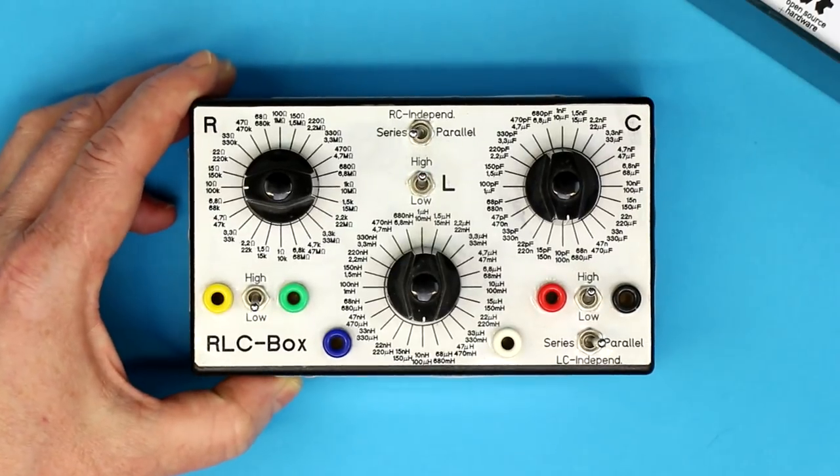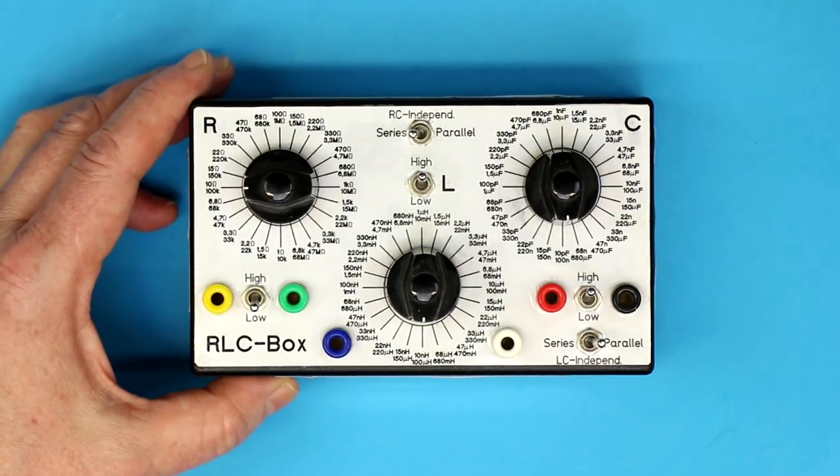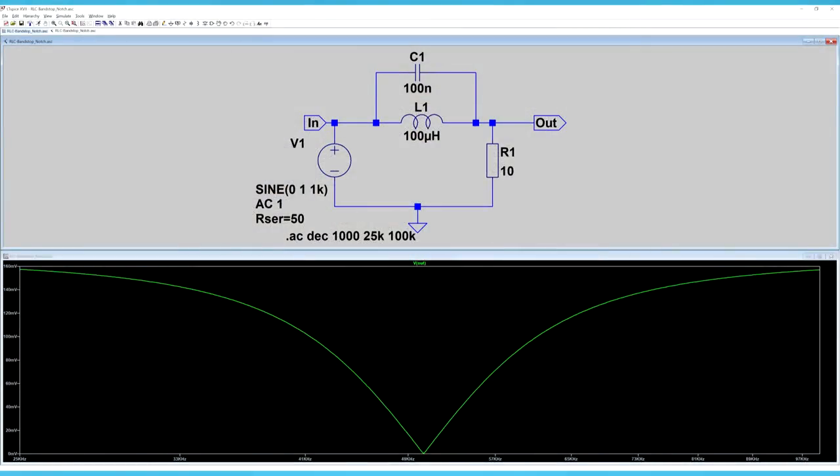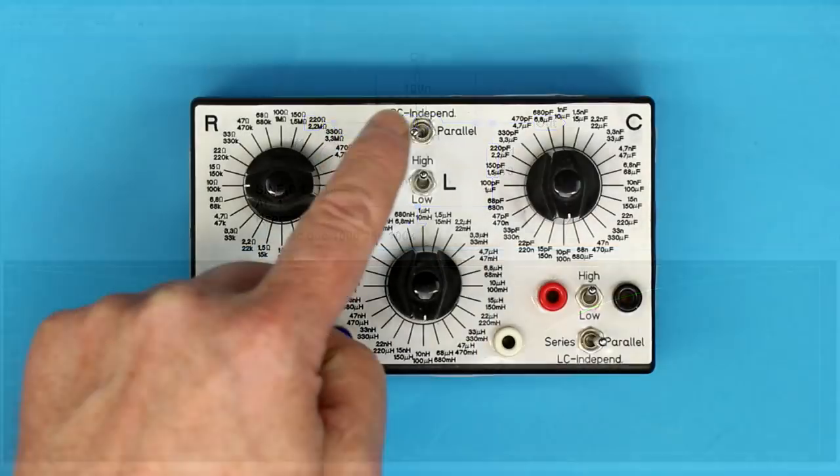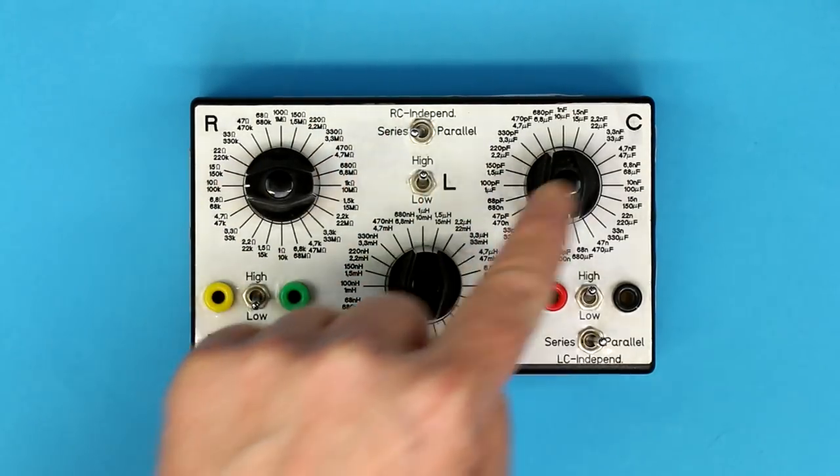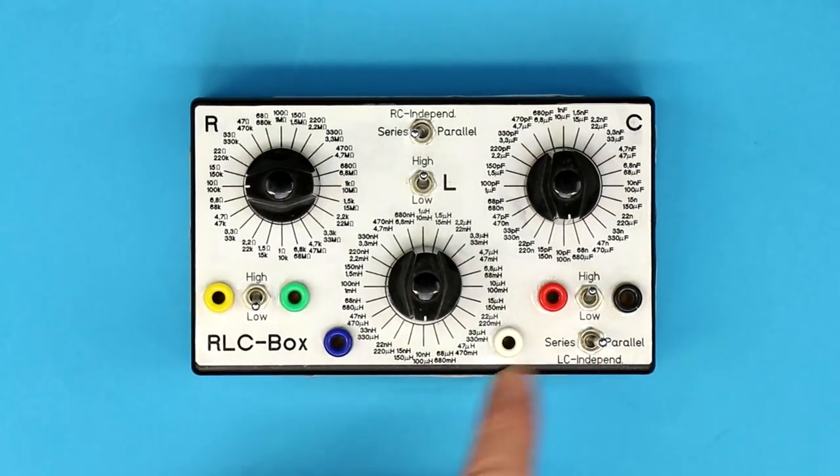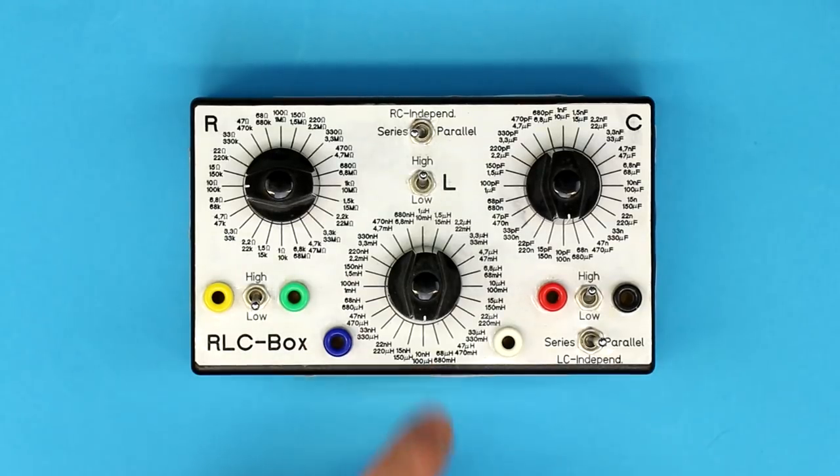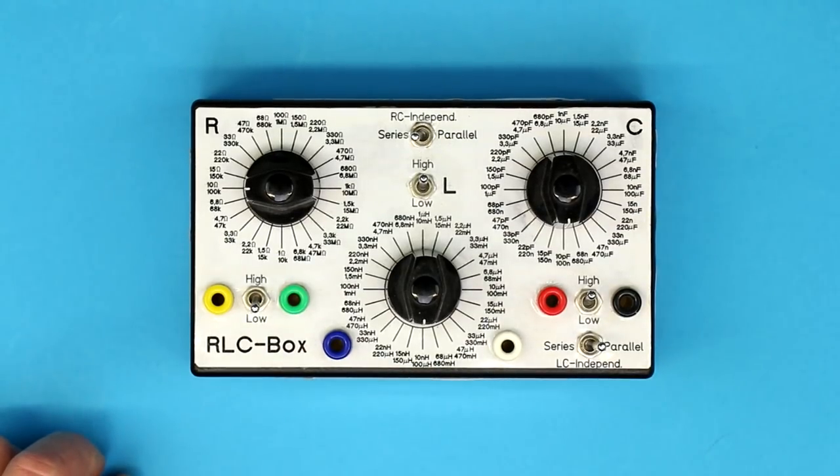The proof is of course in the pudding, so let's make a demonstration with the prototype of an RLC notch filter. You can see in the background a simulation with LT Spice with the values I've already dialed in: 10 ohms for the resistance and the paralleled inductor and capacitor will have 100 microhenries and 100 nanofarads. We just put the resistor in series with the LC and they are paralleled. Now let's connect them to a function generator and an oscilloscope and see if reality matches the simulation.